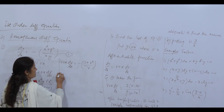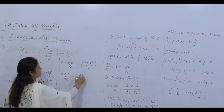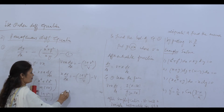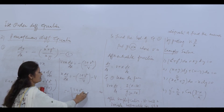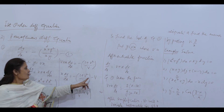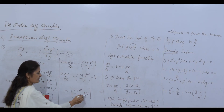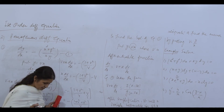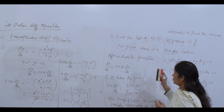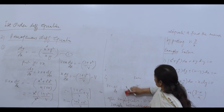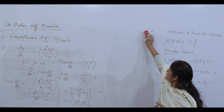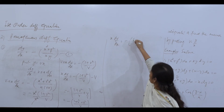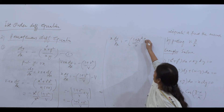Rearranging: x·dv/dx = −(1 + v²)/v − v. Taking the common denominator v and combining: x·dv/dx = −(1 + v² + v²)/v = −(1 + 2v²)/v. After simplification we have x·dv/dx = −(1 + 2v²)/v.